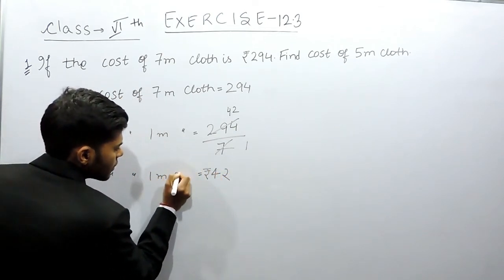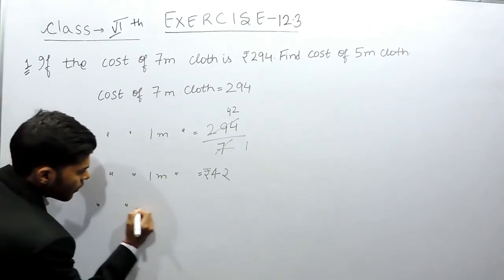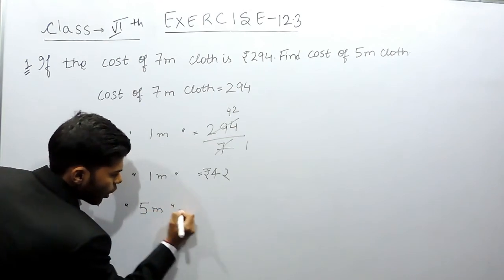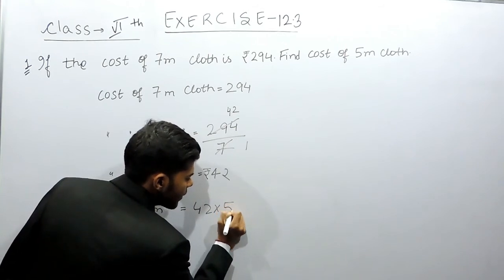Now we have to find the cost of 5 meter cloth, so cost of 5 meter cloth will be equals to, this is the cost of 1 meter so we'll multiply it with 5 and we'll get the cost of 5 meters.